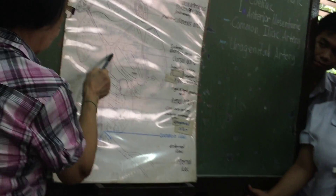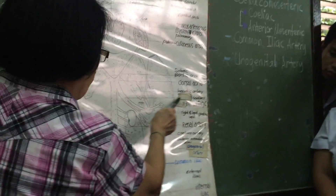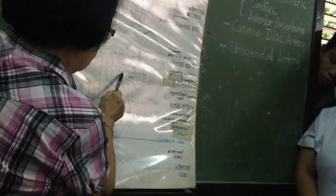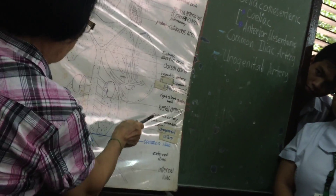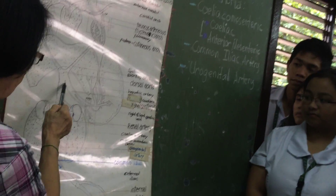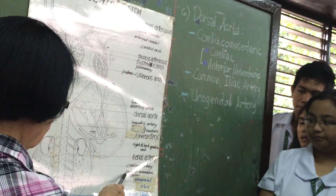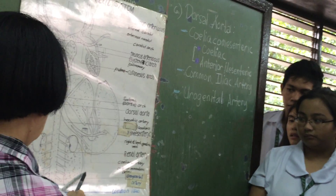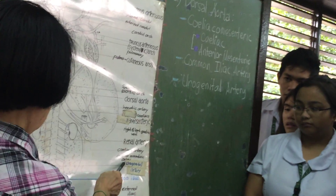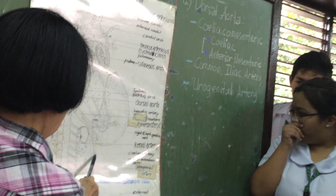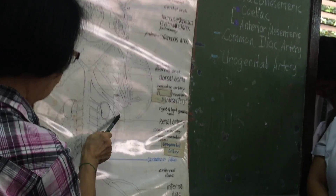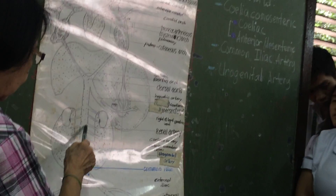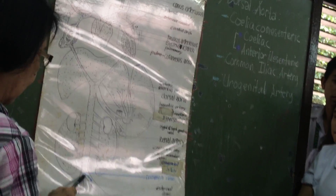The first division after will be your celiacal mesenteric. Then you have the celiac artery, which distributes itself into different organs. On the dorsal aorta you have the anterior mesenteric artery. The anterior mesenteric artery branches out from the celiacal mesenteric point down to the dorsal aorta.